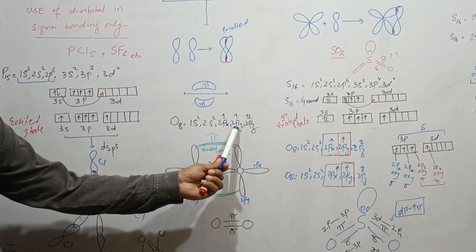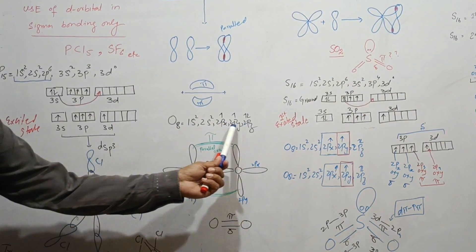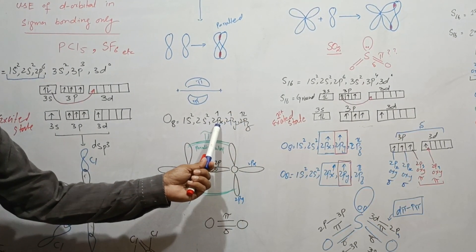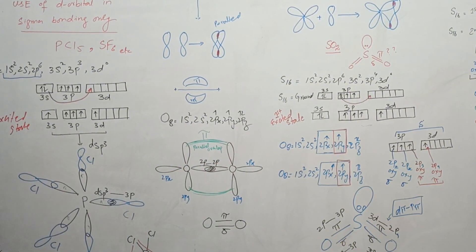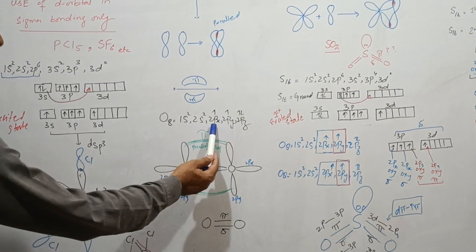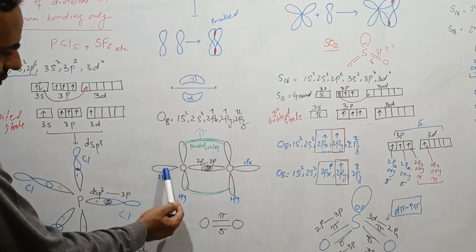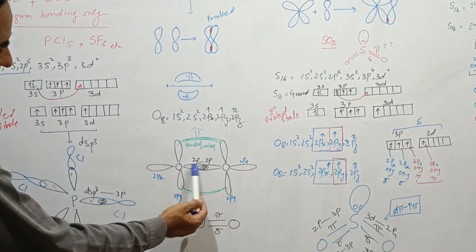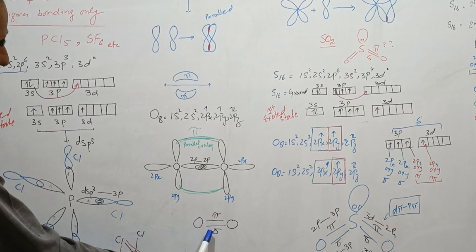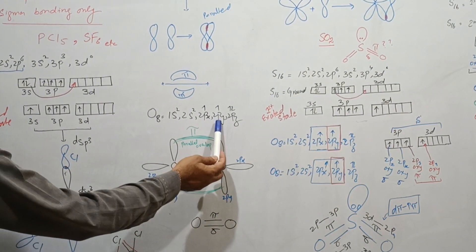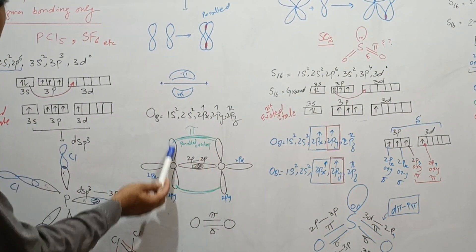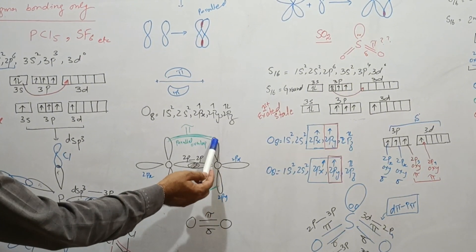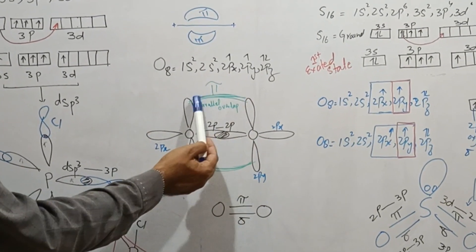The 2px of one oxygen overlaps with the 2px of the other oxygen — this is a linear overlap resulting in the formation of a sigma bond. The 2py of one oxygen overlaps parallelly with the 2py of the other oxygen, and this parallel overlap results in the formation of a pi bond — this is pπpπ bonding.